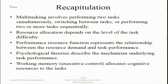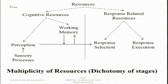The performance-resource function represents the relationship between resource demand and task performance. If a task is primary — that is, of priority — then it will be allocated more resources. Psychological theories describe the mechanisms underlying task performance, and working memory's executive control allocates cognitive resources to the tasks. These are the points we covered in the previous session.